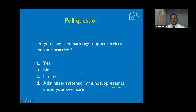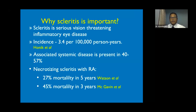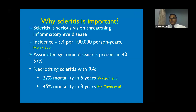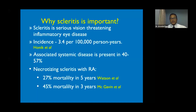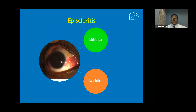Scleritis is a serious and vision-threatening inflammatory disease of the eye. The reported incidence is 3.4 per 100,000 person years. There is an associated systemic disease in 40 to 57 percent of cases. When a serious systemic disease is associated, the mortality rate is significant — some studies report rates from 27 percent up to 45 percent within three years of detection.